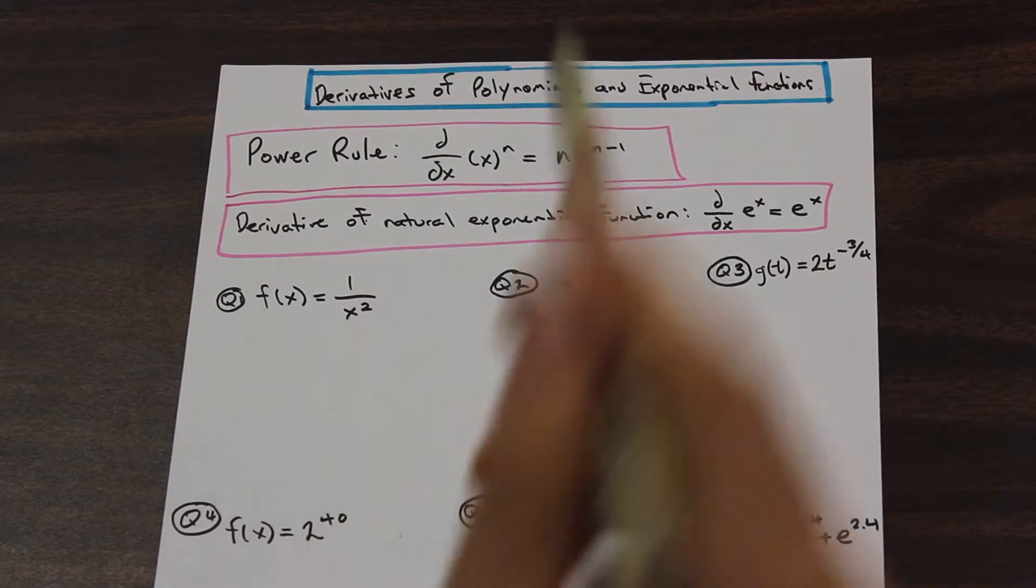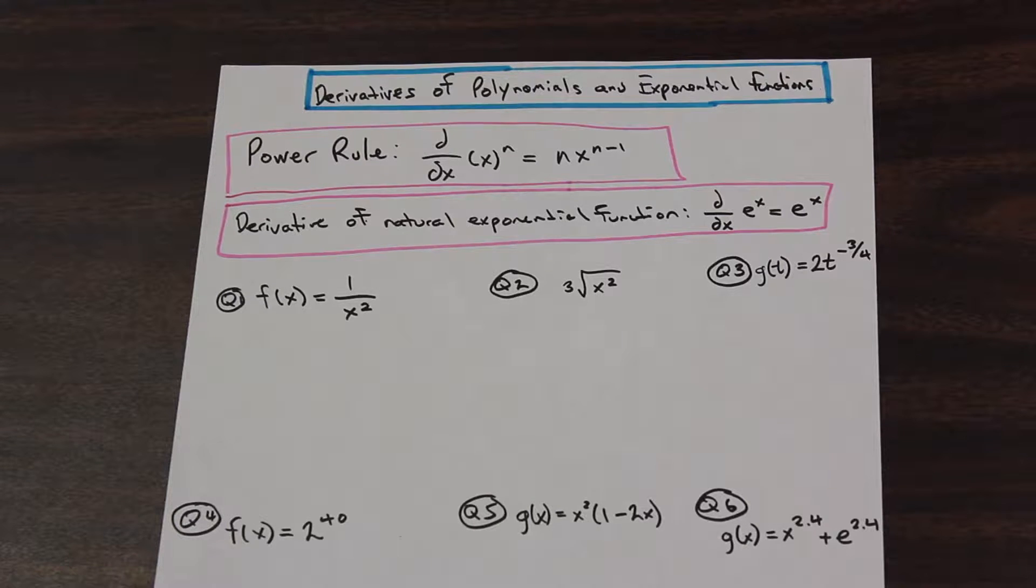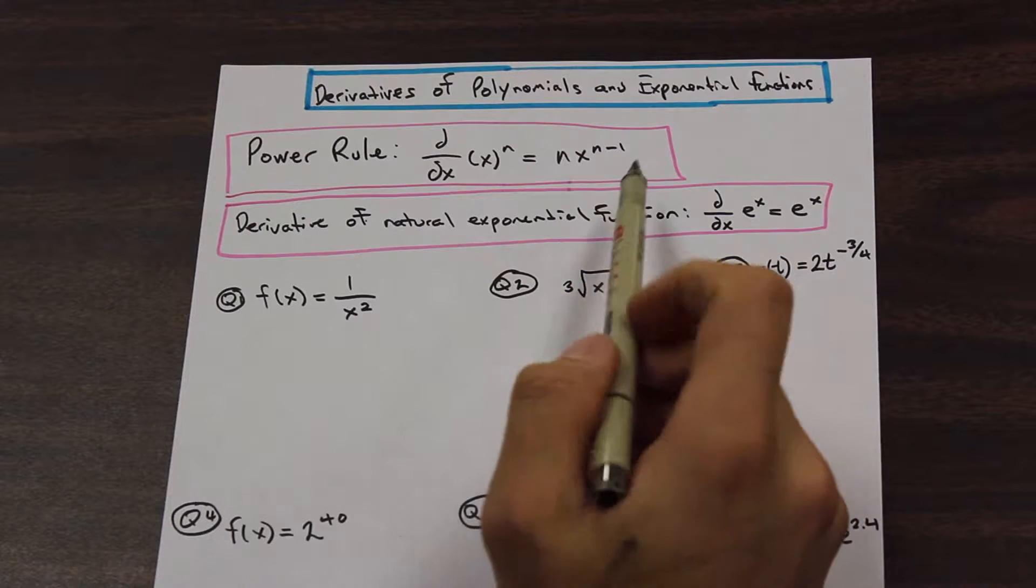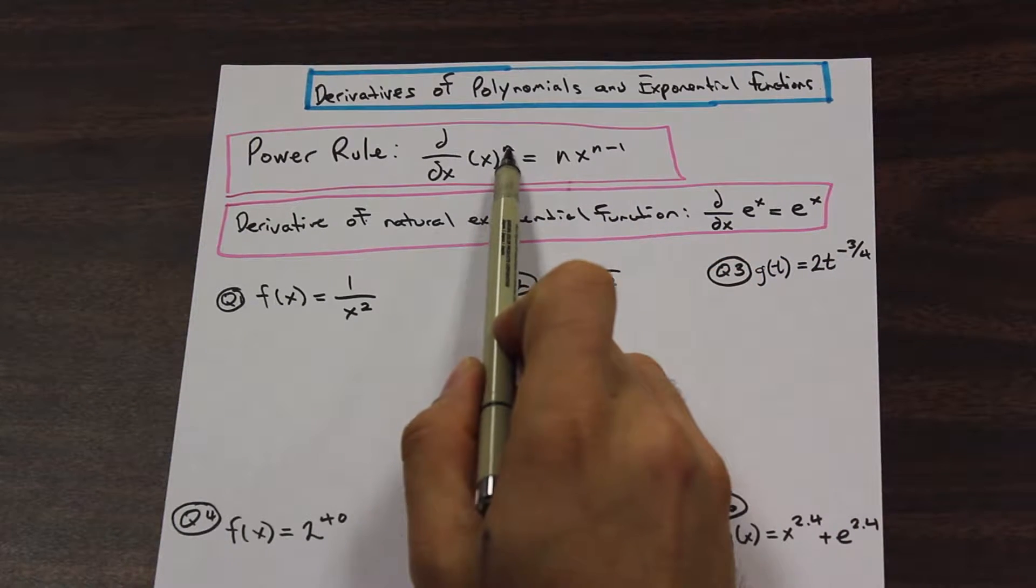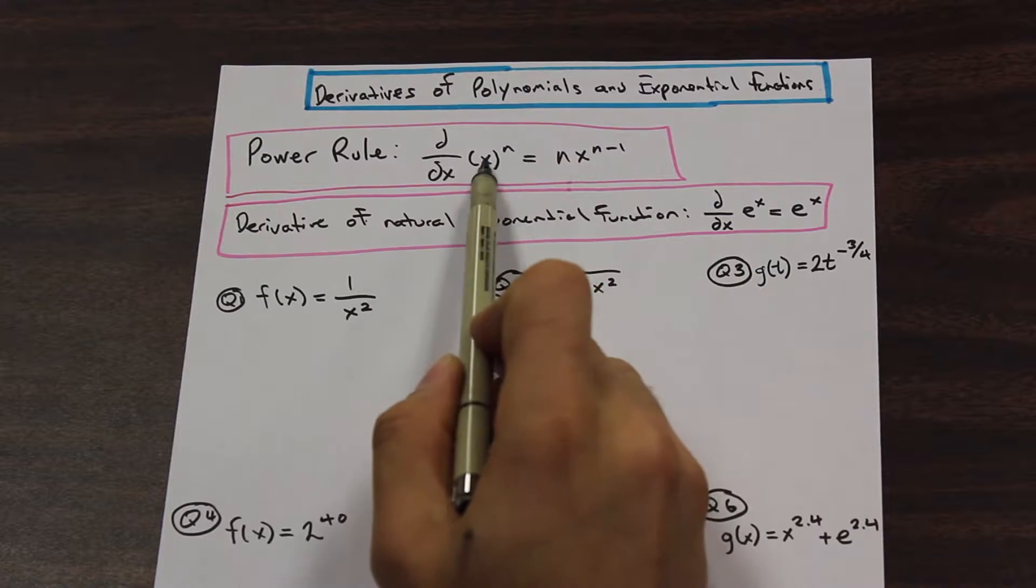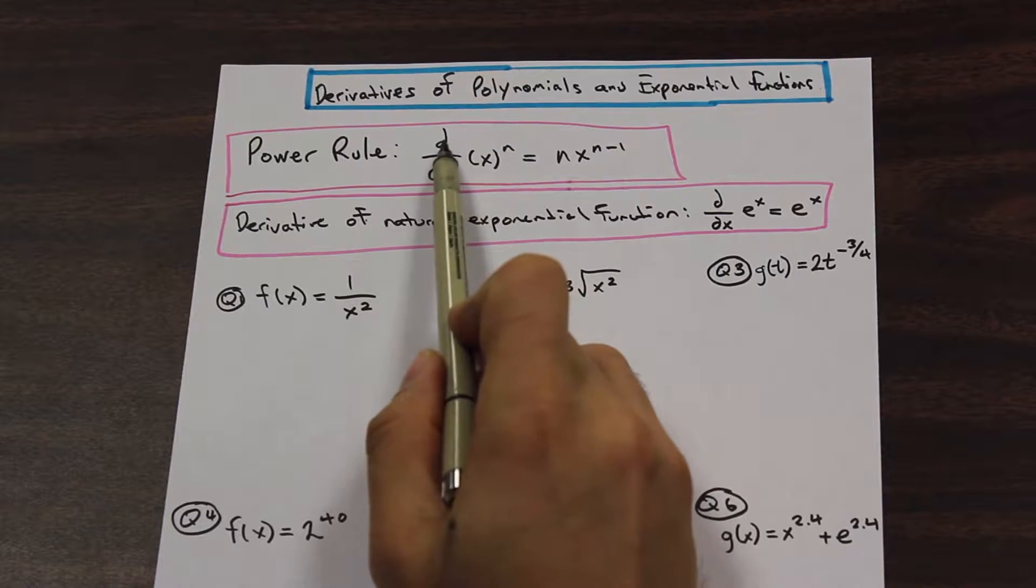I've written two definitions down here. So whenever we have a polynomial, for example, we have like x squared plus two or x squared plus two x plus one. Whenever you have something x to the power of a constant number, what we're going to do is to take the derivative of that.